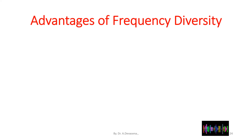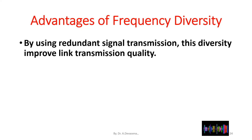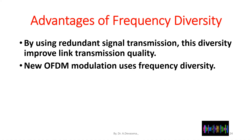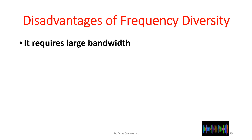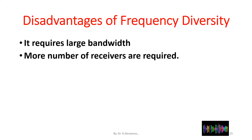Advantages of frequency diversity: by using redundant signal transmission this diversity improves link transmission quality, and new OFDM modulation uses frequency diversity. Disadvantages of frequency diversity: it requires large bandwidth, more receivers are required, and it is high cost.